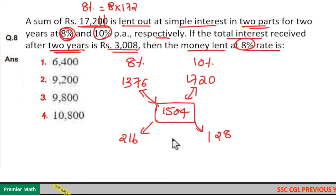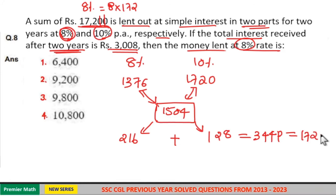So here 216 part plus 128 part is equal to 8 plus 6 is 14, 2 plus 2 is 4, 1 plus 3 is 4. So this 344 part is equal to total sum Rs. 17,200.